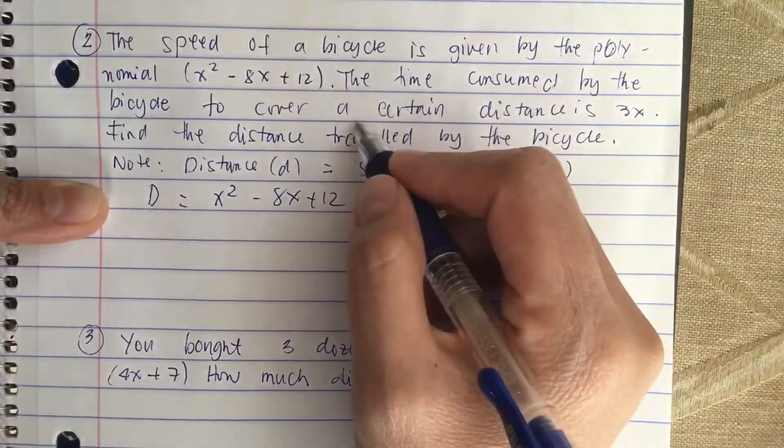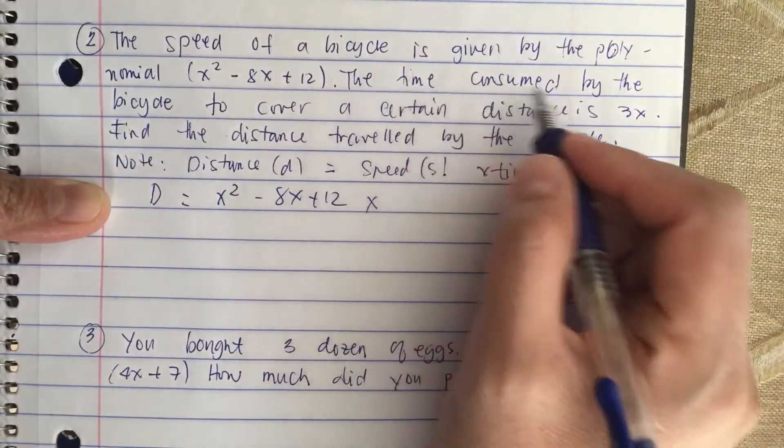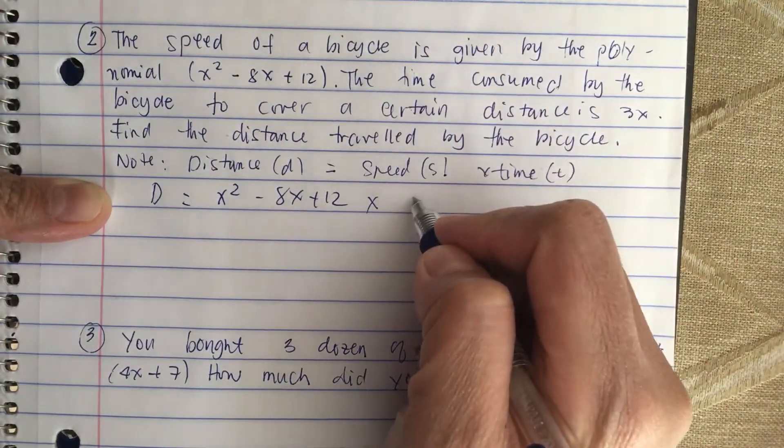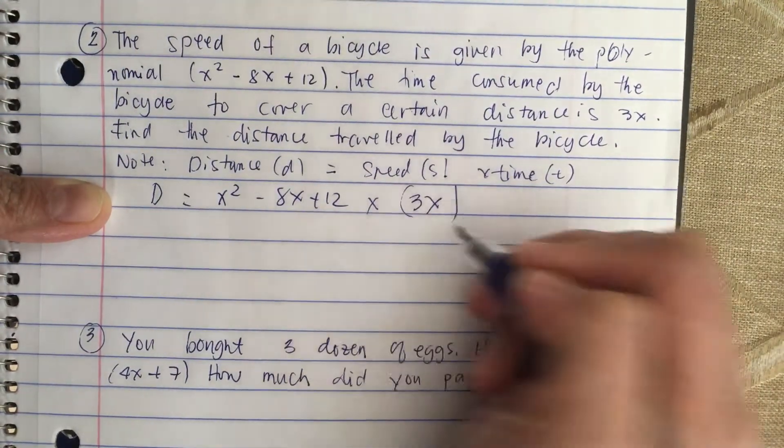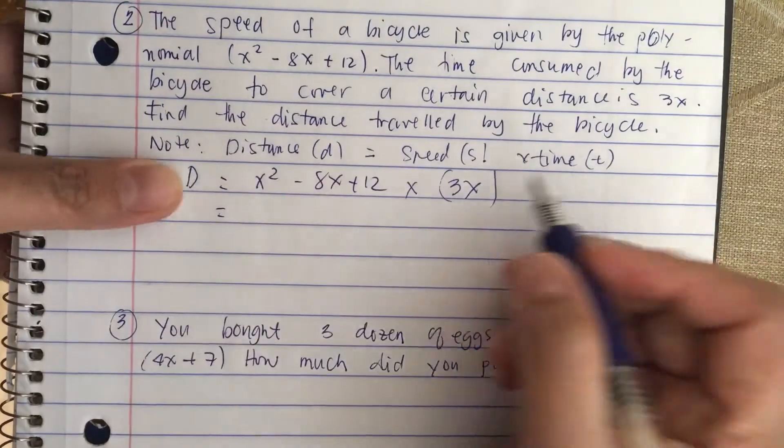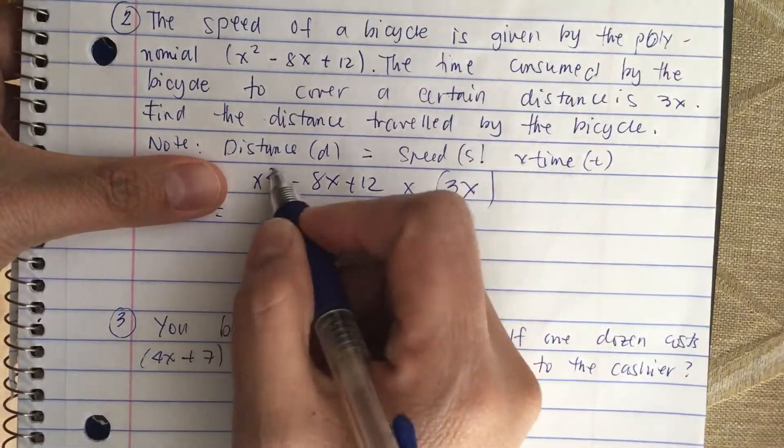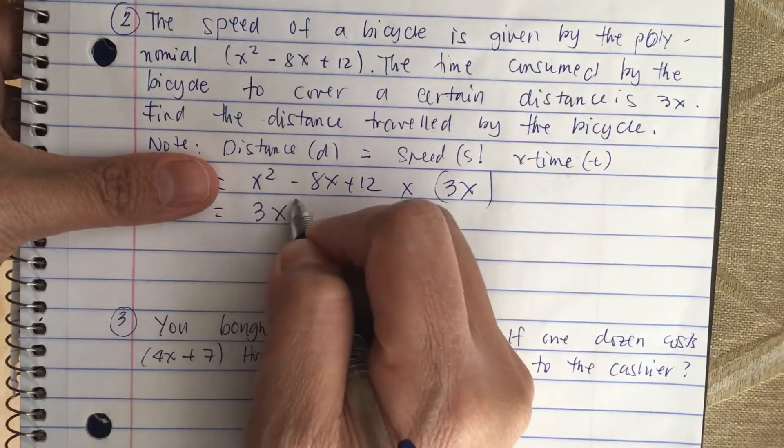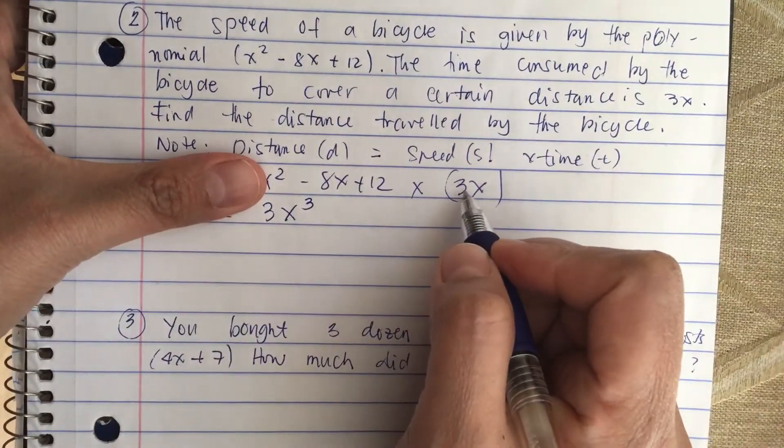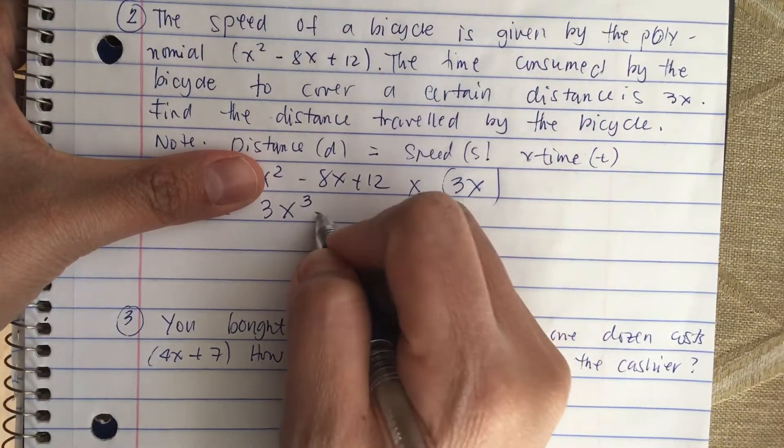They give us the time, so the time consumed is 3x. So we multiply this to get the distance. We get 3x times x squared is 3x cubed, and then 3x times minus 8x is minus 24x squared.